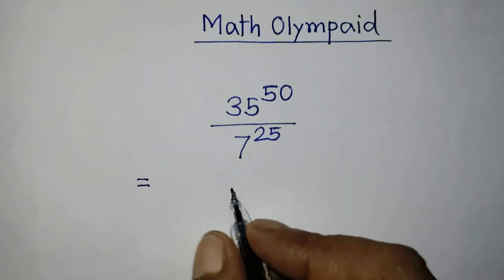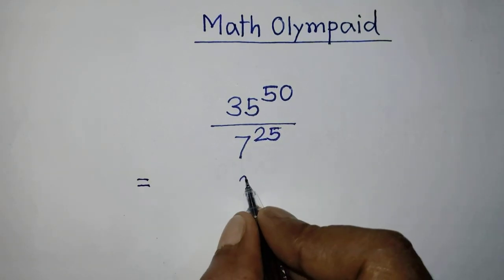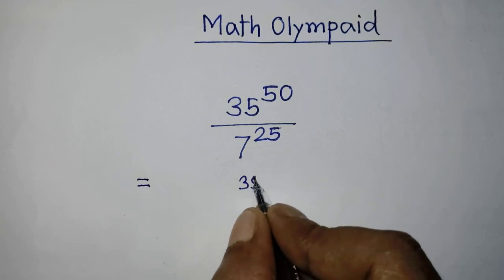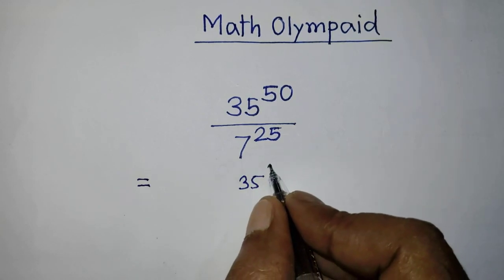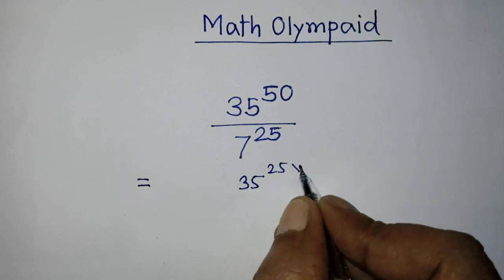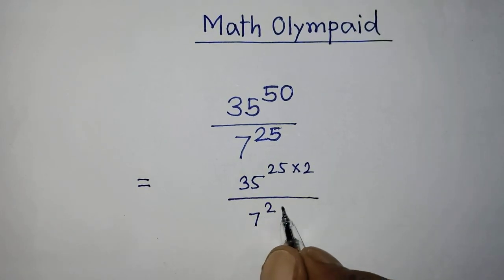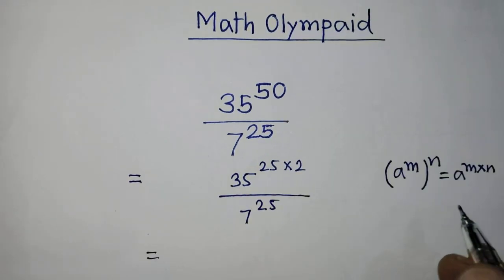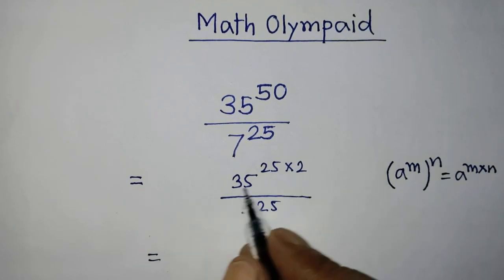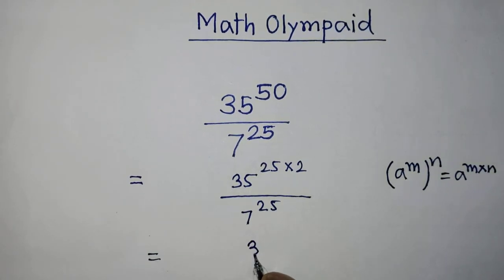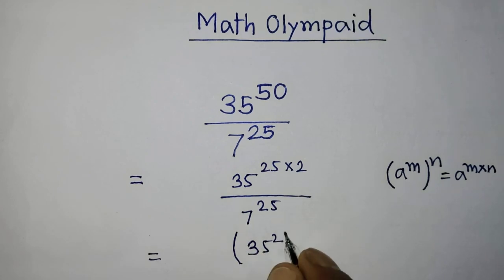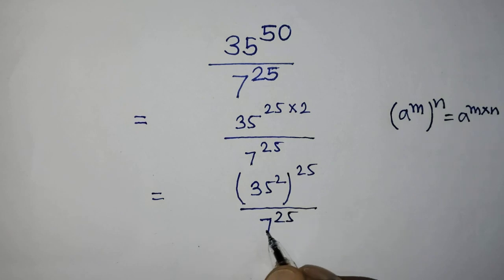It will be 35 whole to the power 25 times 2, over 7 to the power 25. So according to this, it will be 35 whole to the power 2, whole to the power 25, over 7 to the power 25.